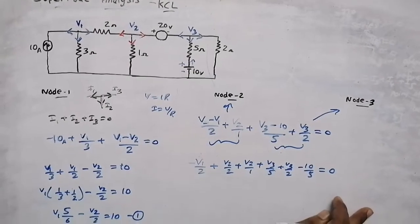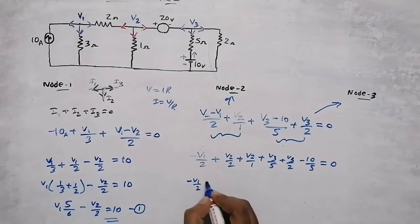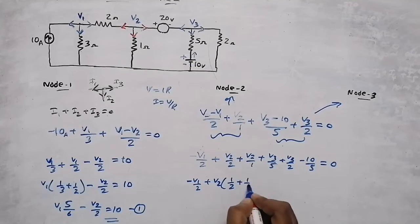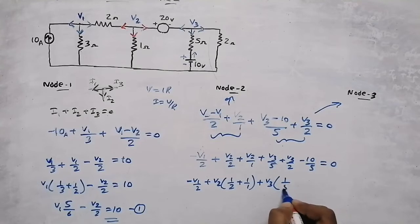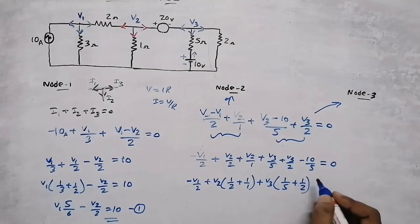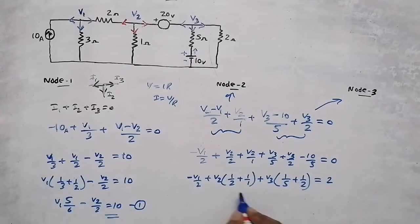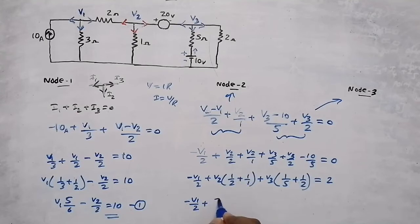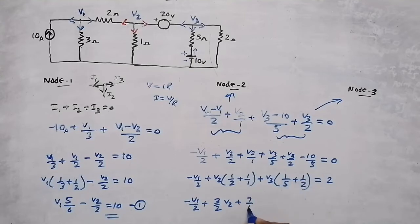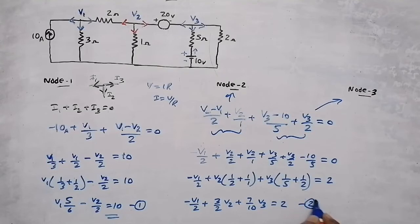Simplifying: V1 has only one term, −V1/2. V2 is common to two terms, so taking V2 outside: V2(1/2 + 1/1). V3 is common to two terms: V3(1/5 + 1/2). Then −10/5 = −2 moves to the right side as +2. Cross-multiplying: −V1/2 + V2(3/2) + V3(7/10) = 2. That is our second equation.